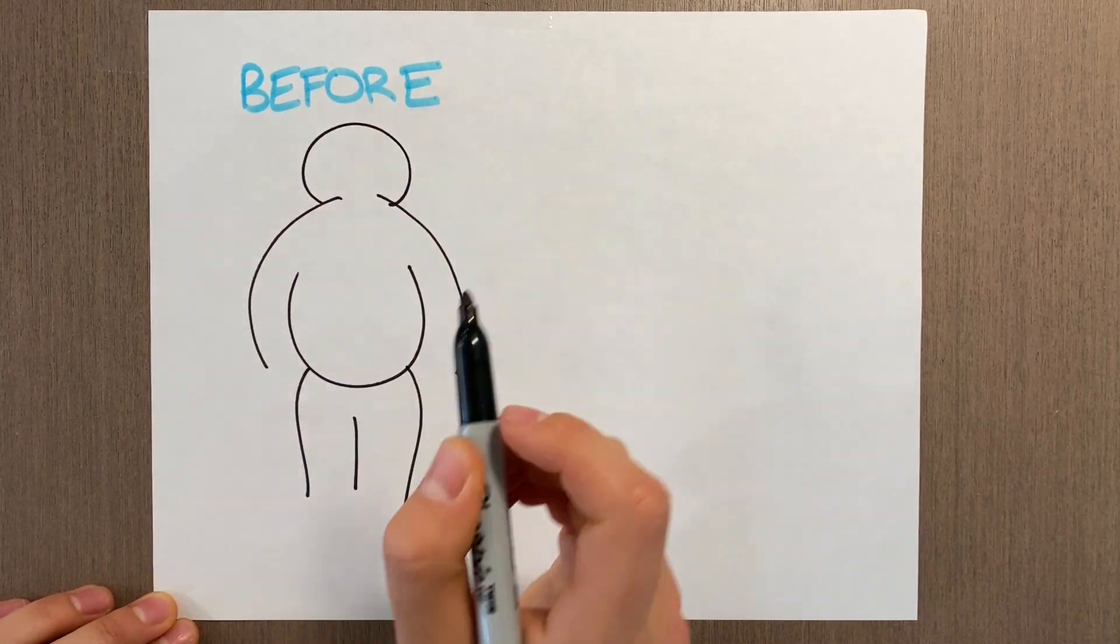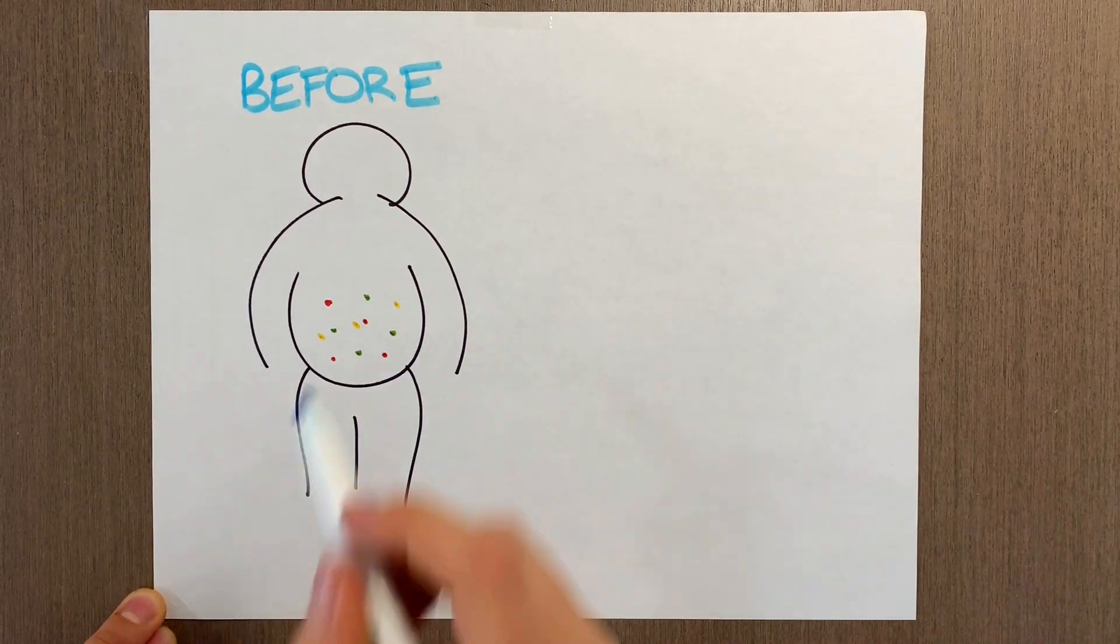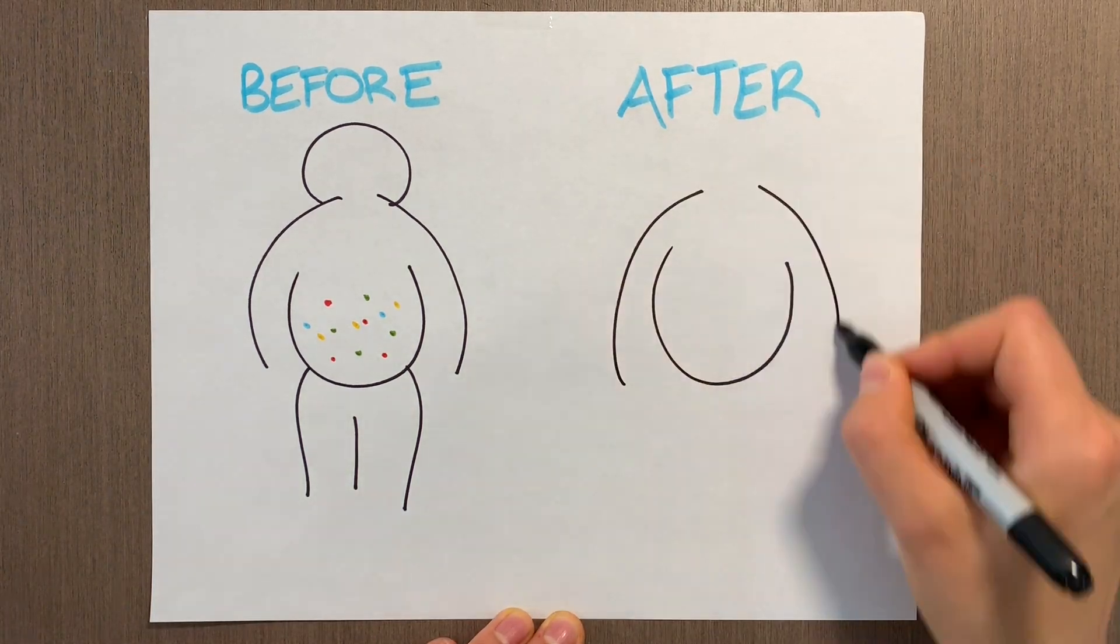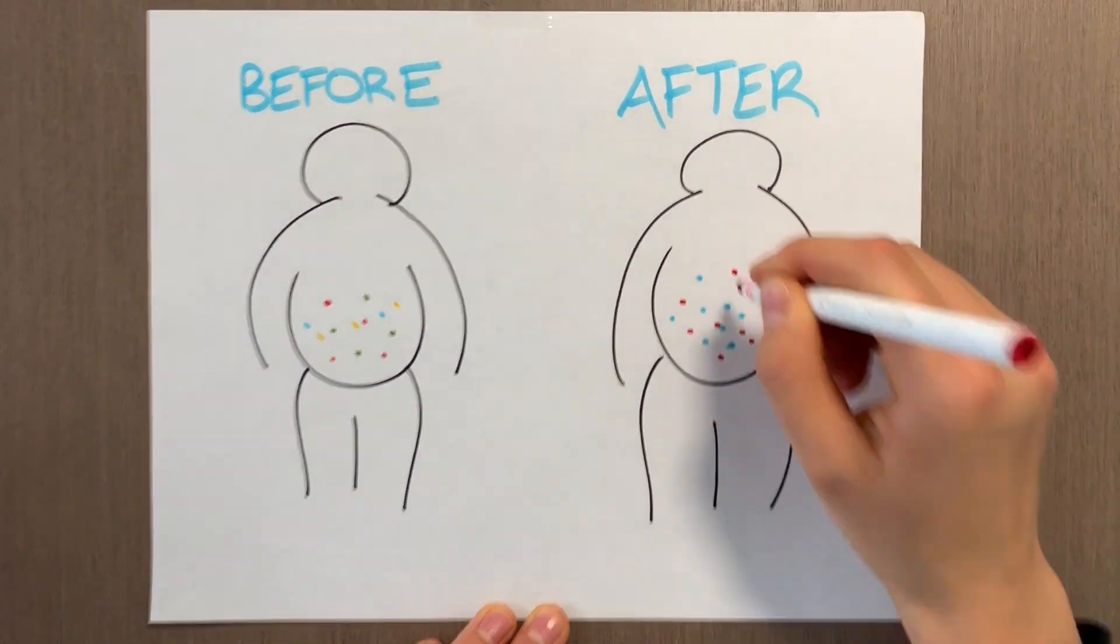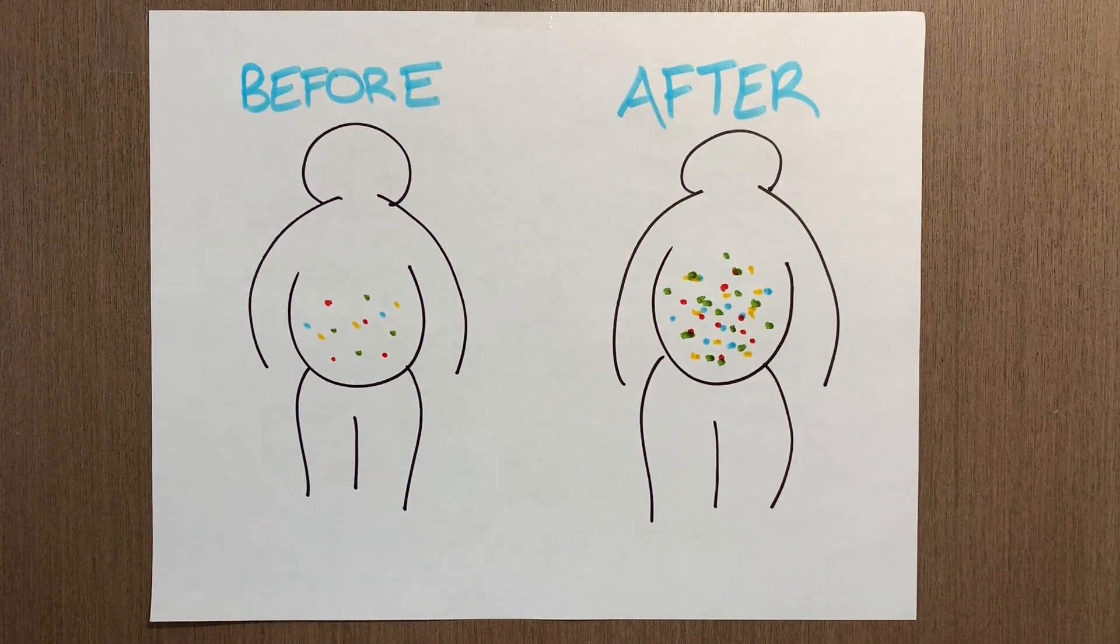such as increased diversity within the gut microbiota and decreased levels of substances that aid in fat absorption. This resembles the gut microbiota of a lean individual.